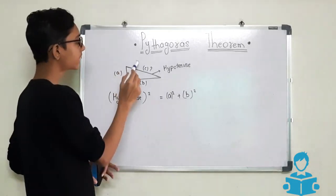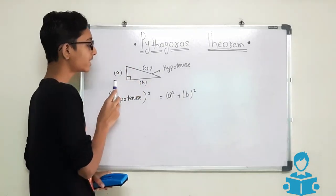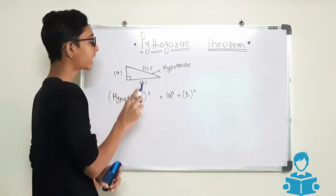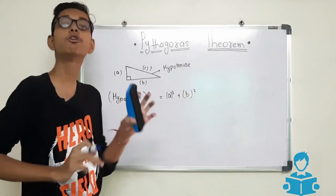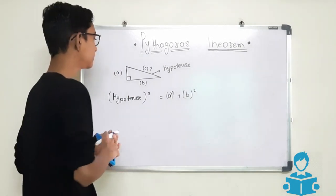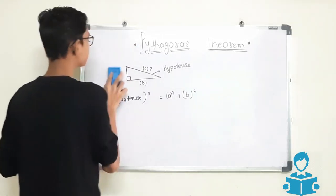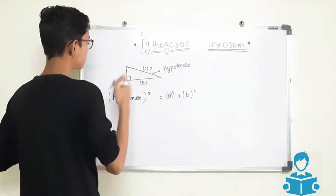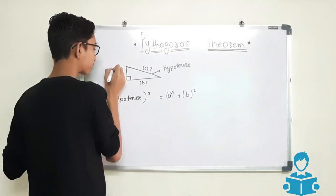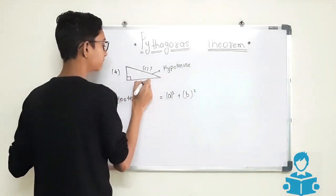To find the hypotenuse, we have to add the square of A and the square of B. We will take a simple example here. For example, the value of A is 4 and the value of B is 3.